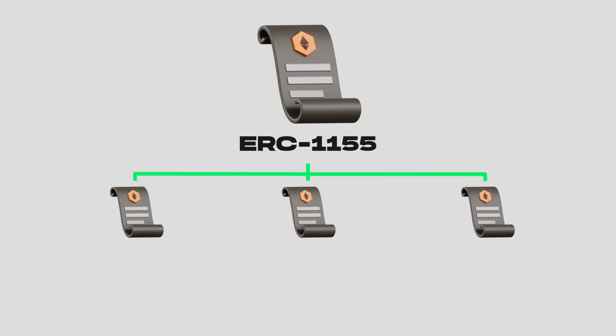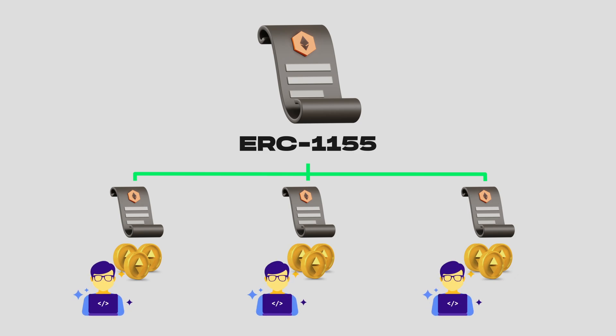Now let's talk about ERC-1155 contracts. These are a combination of ERC-20 and ERC-721 contracts. The contract has tokens, but these are not distributed — each token is its own sort of contract, so each token is an item and has its own supply.